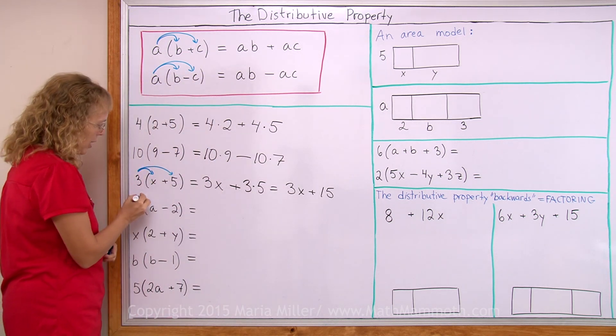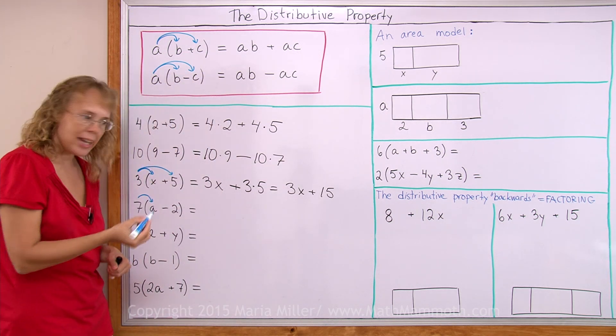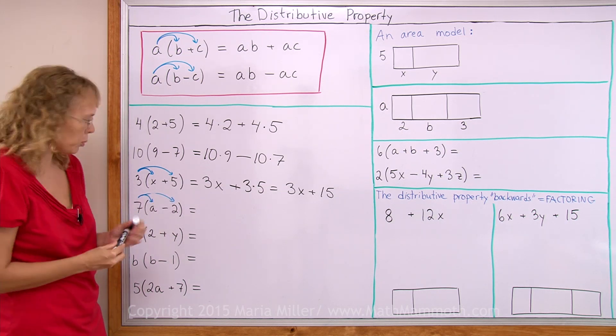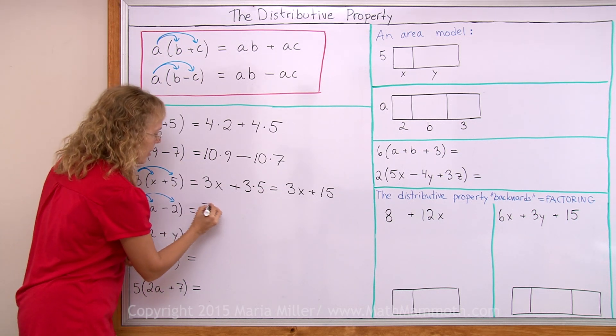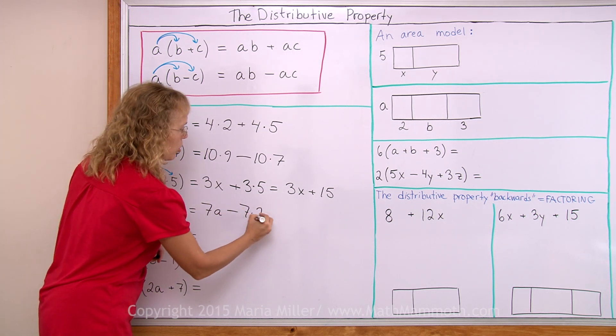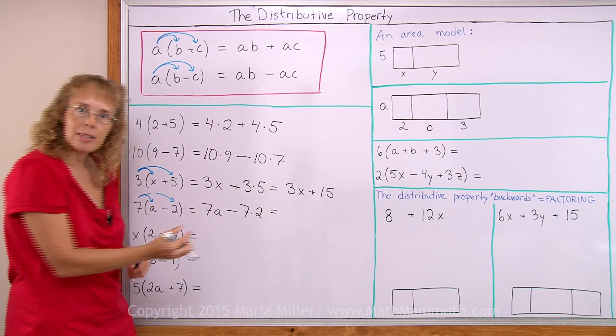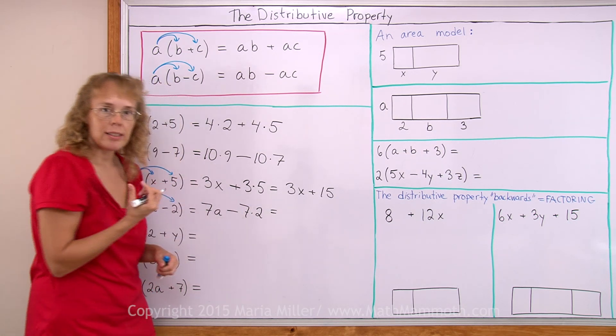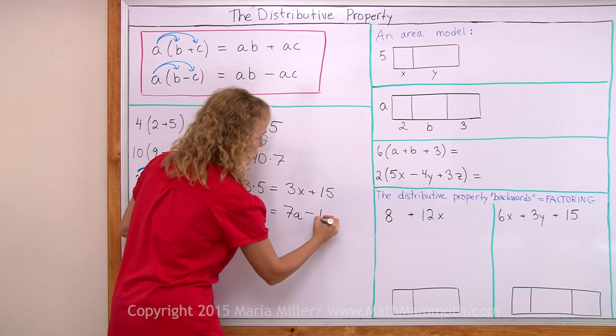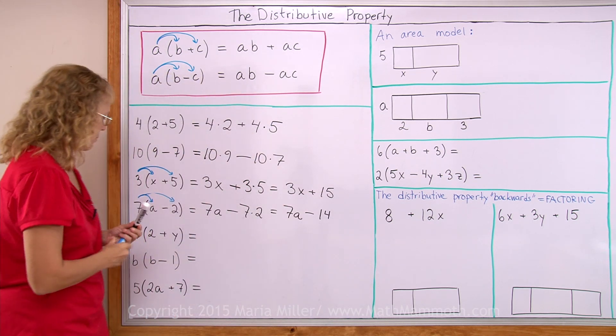Over here the same happens. 7 times a at first and then from that we subtract 7 times 2. And 7 times a is written as 7a, and then minus 7 times 2. Again I can simplify this 7 times 2 part - it's 14. So it is 7a minus 14.